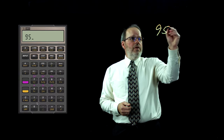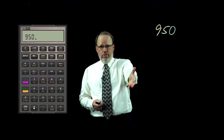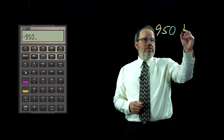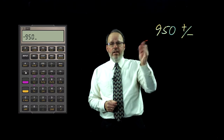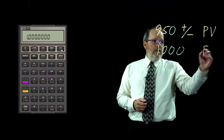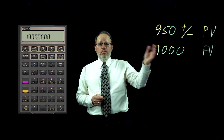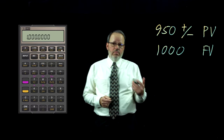$950 is what Roland pays for the bond. The money is leaving his hands to purchase the bond — that's a negative cash flow. Hit the plus/minus key to change the sign to negative $950. That will be your present value. When the bond matures it will be worth $1,000, so that's our future value and it's a positive number. Remember, whenever you enter both a present value and a future value, one must be negative and one positive.